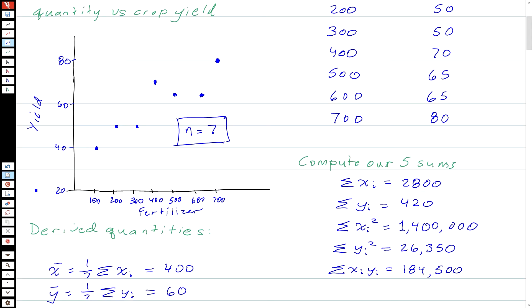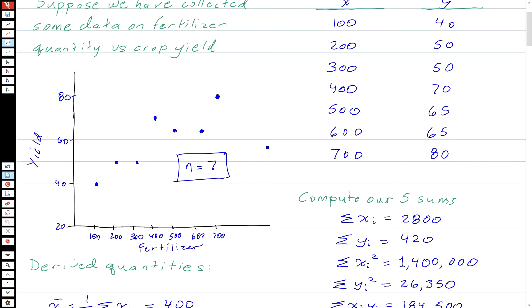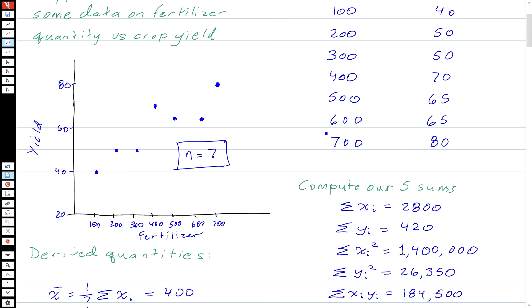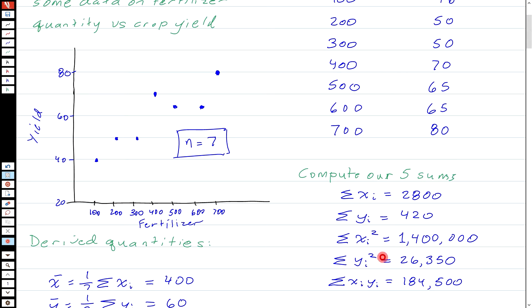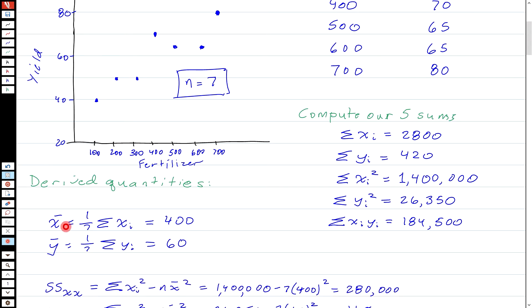So as we mentioned the other day, in order to do the regression, we need to compute five sums. And so all I've done here is I've taken the sum of all these X values is 2,800. And Y is the right-hand column. So the sum of all these numbers is 420. And the sum of these ones squared is 1,400,000. The sum of these things squared is 26,350. And then the sum of the cross-products, X times Y, is 184,500. So once I have these sums, everything else is a matter of looking in the summary pages and sticking them into that formula. For example, X bar is 1 over N, N is 7, times the sum of the XIs, which gives me 400. And Y bar is 1 7th of the sum of the Ys, which gives me 60.